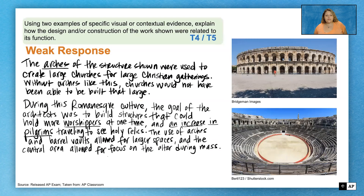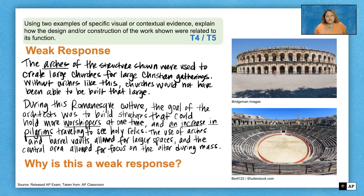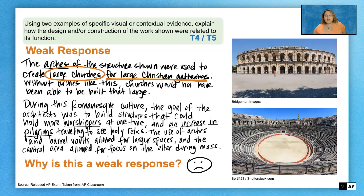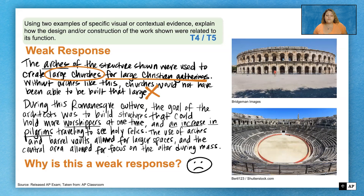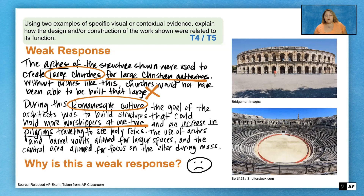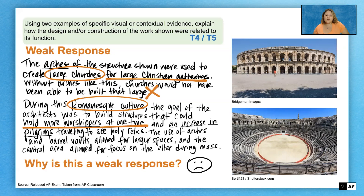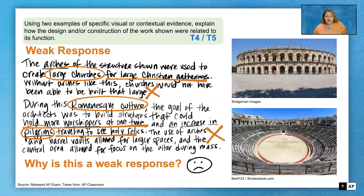Let's look at weak examples for T4 and T5: using two examples of specific visual or contextual evidence to explain how the design and/or construction are related to its function. A weak response: 'The arches of this structure were used to create large churches for large Christian gatherings. Without arches, churches would not have been able to be built that large.' This seems to be talking about Romanesque architecture of the medieval era. Another weak response mentions pilgrims traveling to see holy relics — again, correct for Romanesque but incorrect for Imperial Roman use of a building like this.